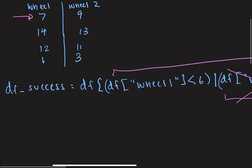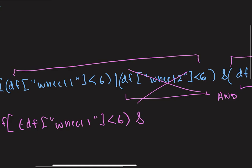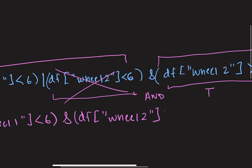So we can actually rewrite DF success and simplify it to just DF of wheel 1 is less than 6 and DF of wheel 2 would be greater than 9. And this would be our conditional.